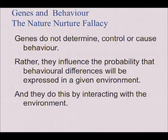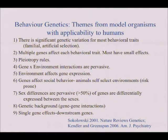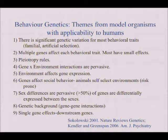Behavior genetics themes from model organisms do have applicability to humans. Looking at both animal and human work, we can conclude that there is significant genetic variation for most behavioral traits. You take any animal, do artificial selection, and you get a response for most things. Multiple genes affect each behavioral trait. It used to be thought that these genes all had small, equal, and additive effects on behavior.